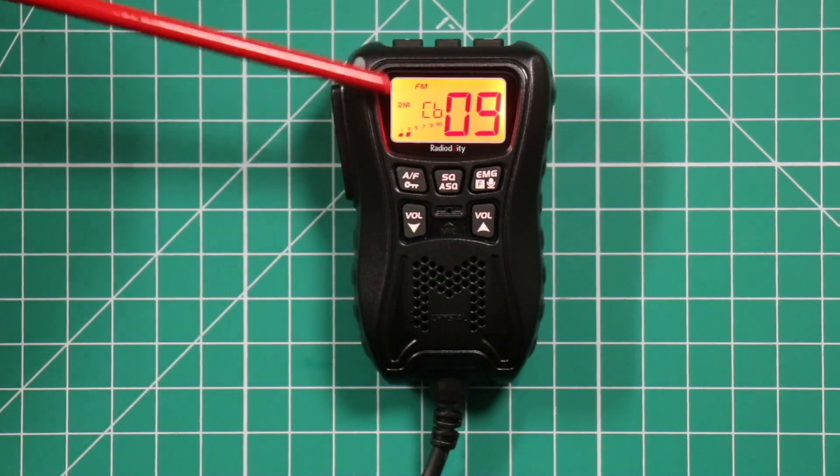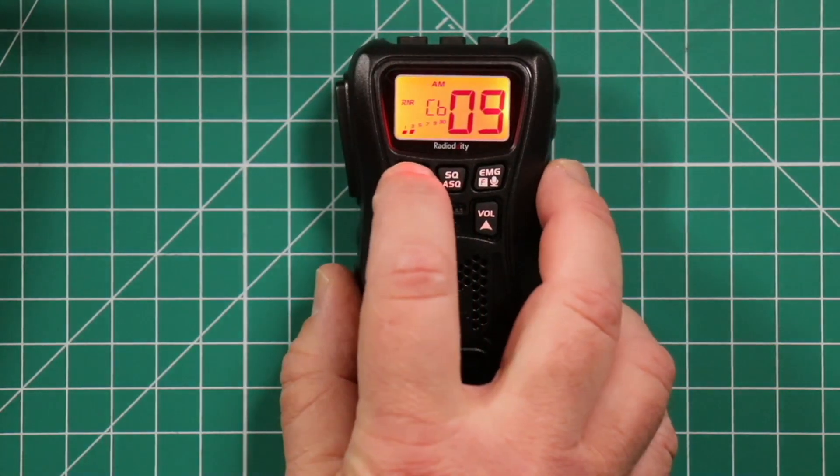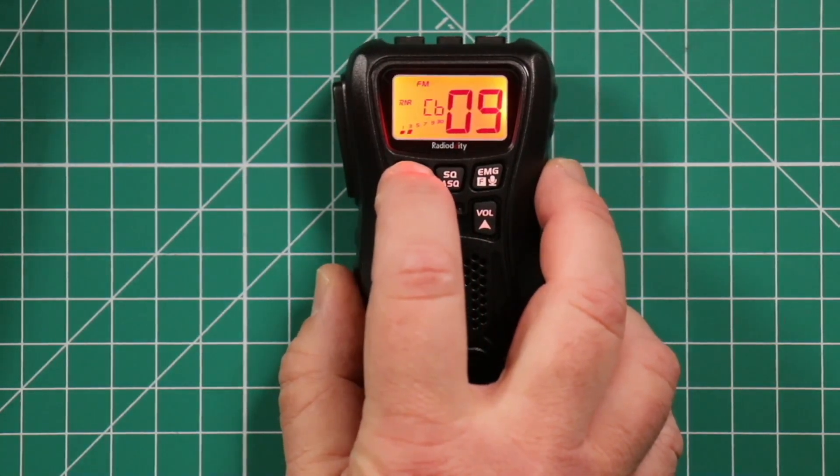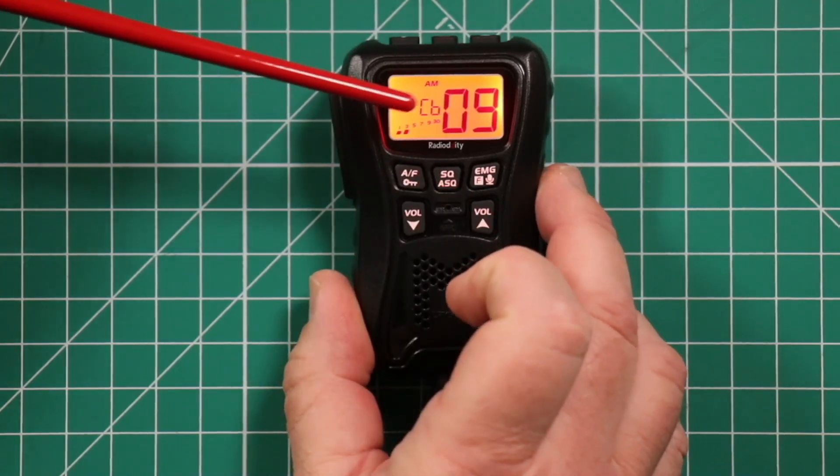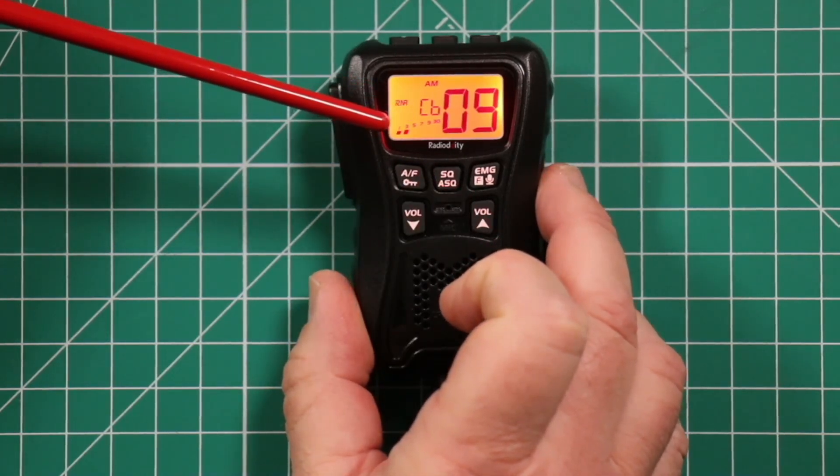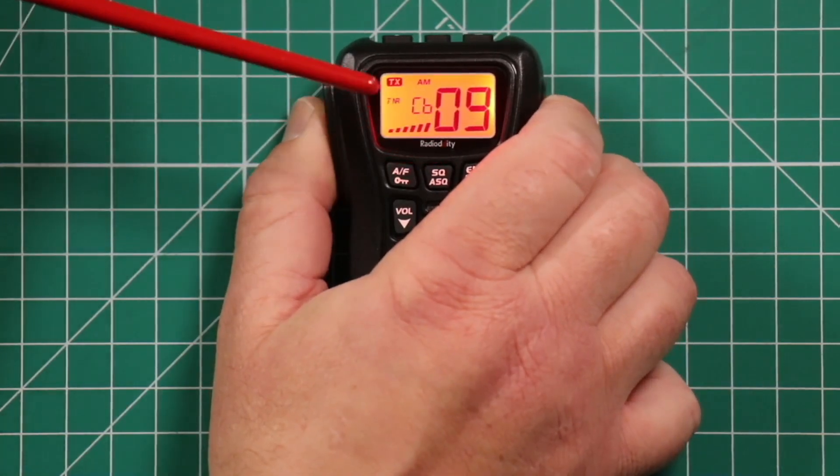On the screen, it shows you're in FM. If you want to change to AM, just use the top left button and you go to AM. It shows you're in CB, gives you a little meter scale. If you press the push to talk, you can see it goes all the way up and shows you that you're transmitting.